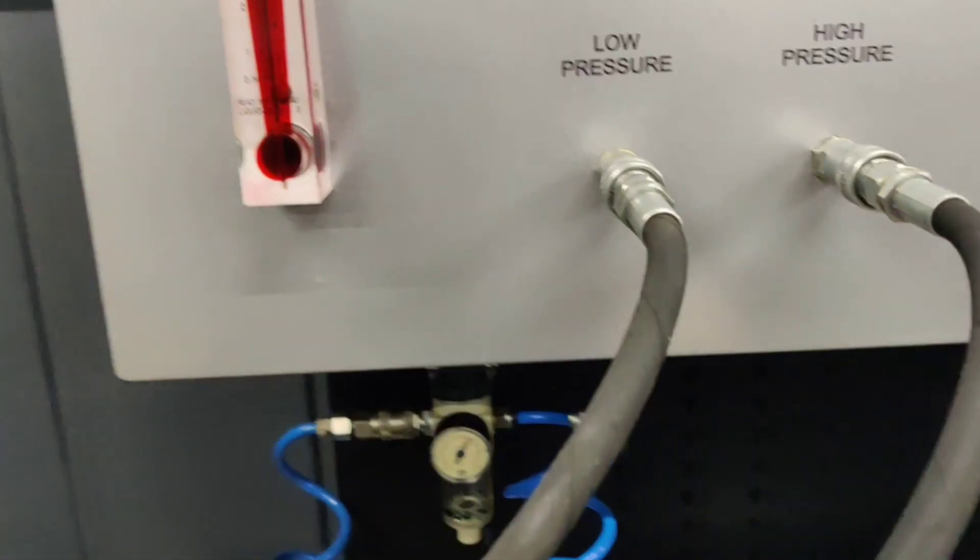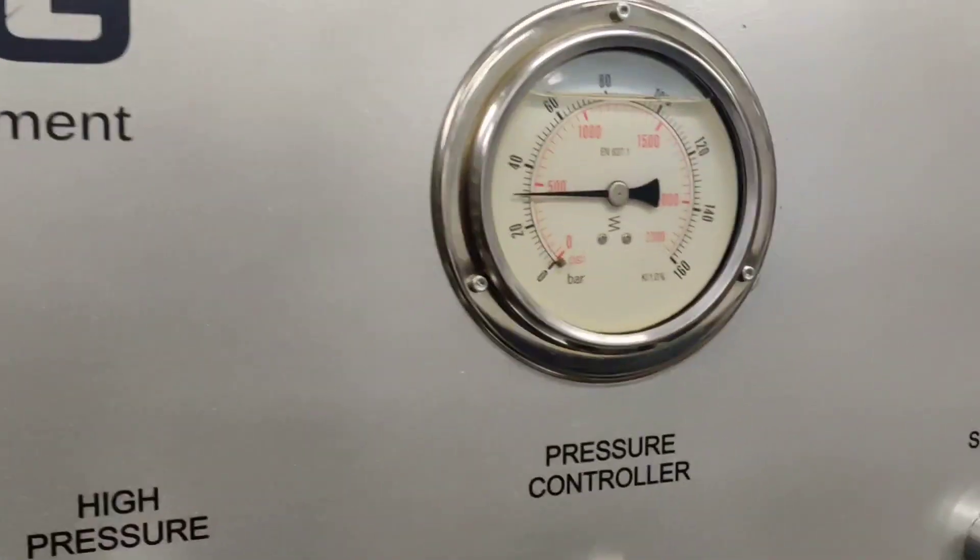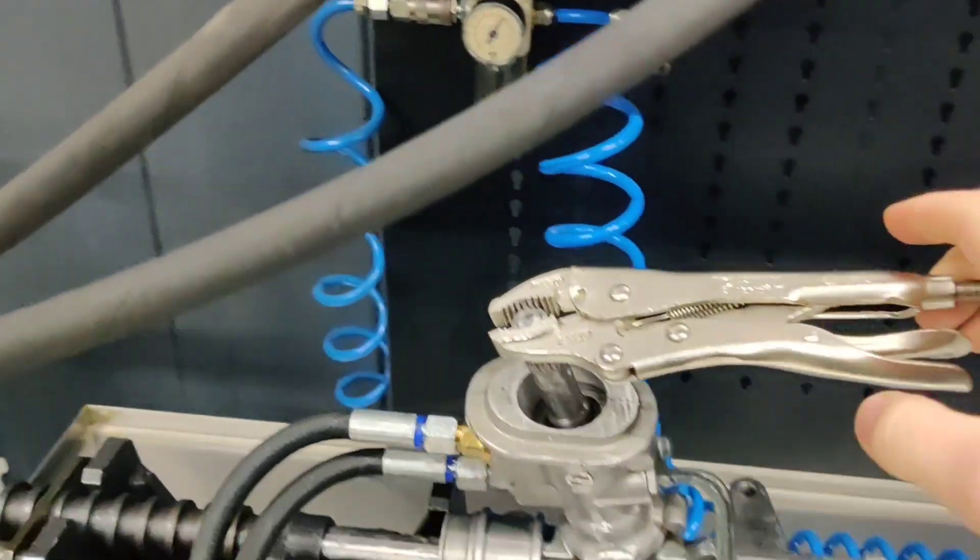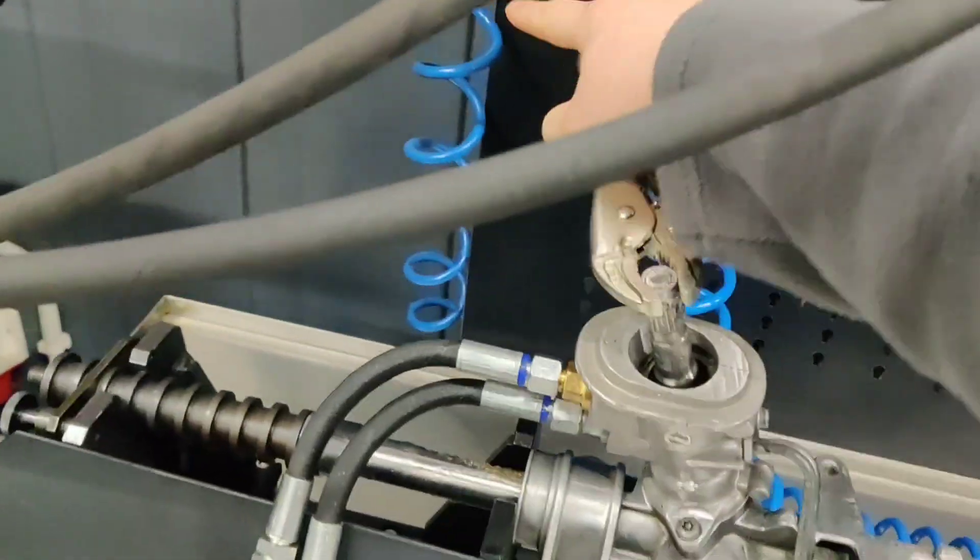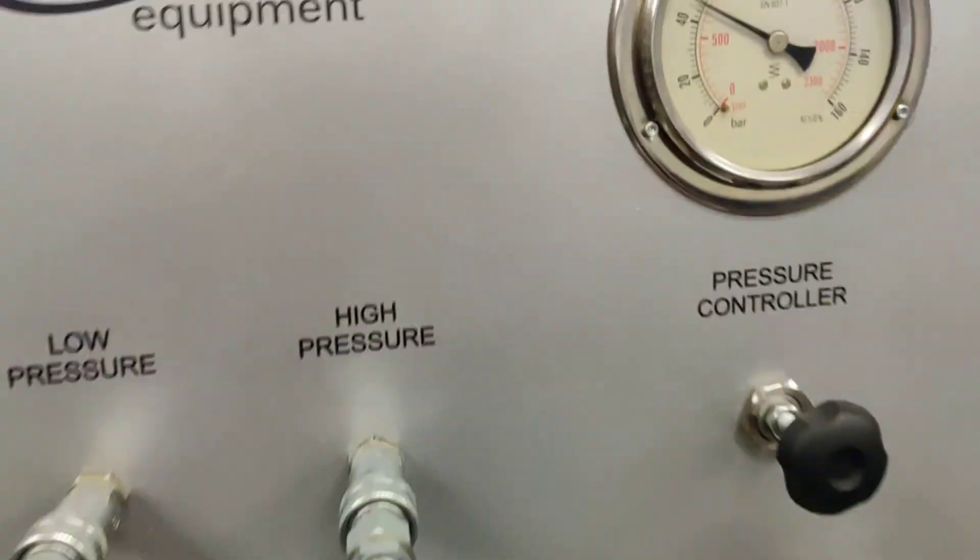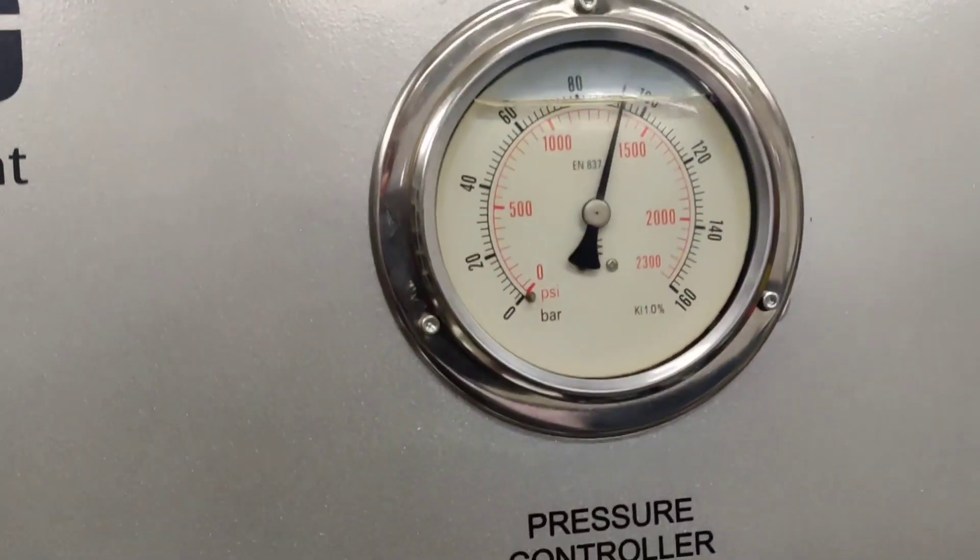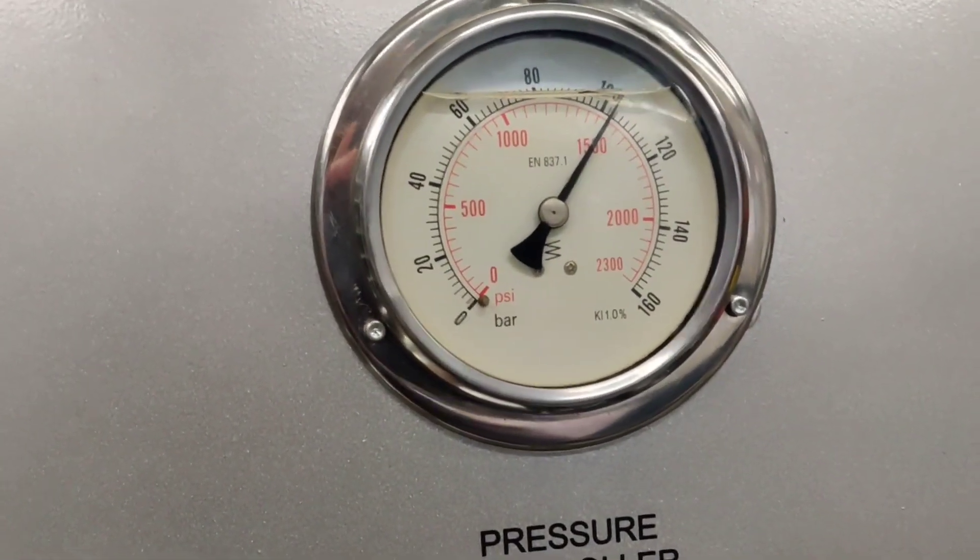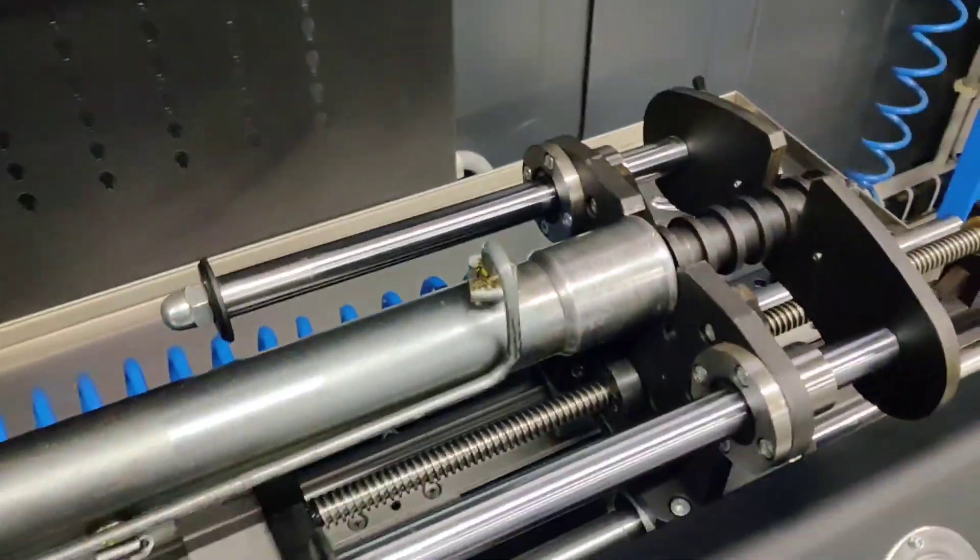And firstly, I need to check the pressure in the extremity position. So I push it to the extremity position. As you can see. And I need to check the pressure. Yeah, so I don't have a leakage here. The rack is good.